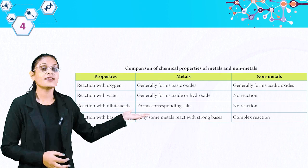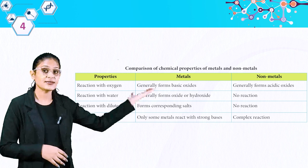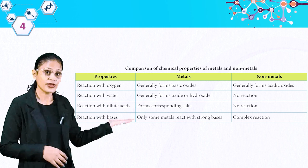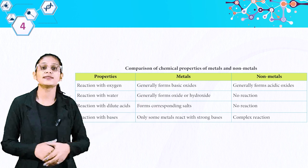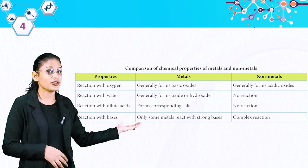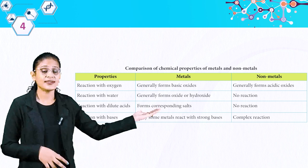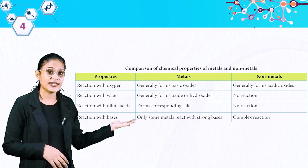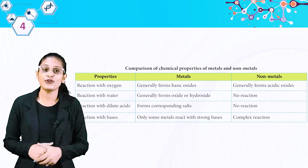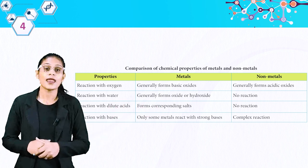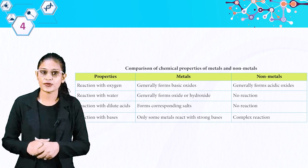Here is a comparison of chemical properties of metals and non-metals. Reaction with oxygen: metals generally form basic oxides; non-metals generally form acidic oxides. Reaction with water: metals generally form oxide or hydroxide; non-metals show no reaction. Reaction with dilute acids: metals form corresponding salts; non-metals show no reaction. Reaction with bases: only some metals react with strong bases; non-metals show complex reactions.